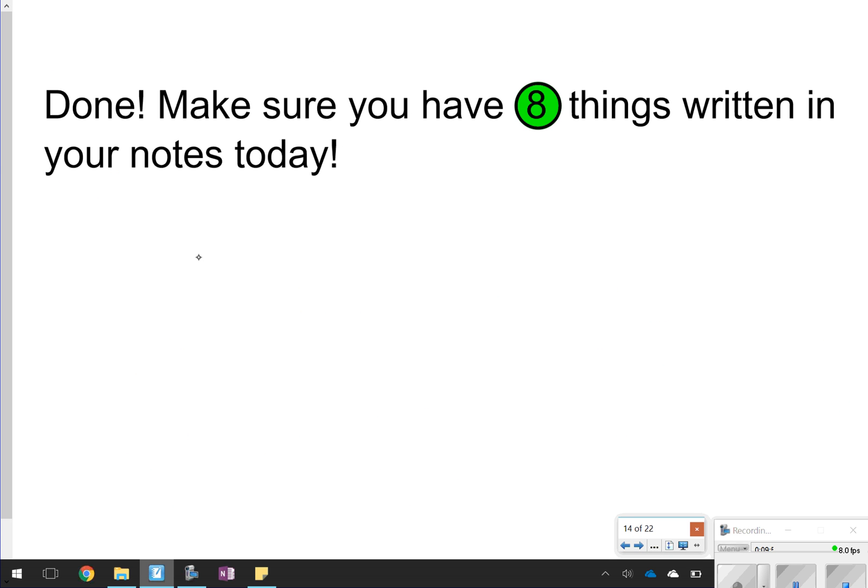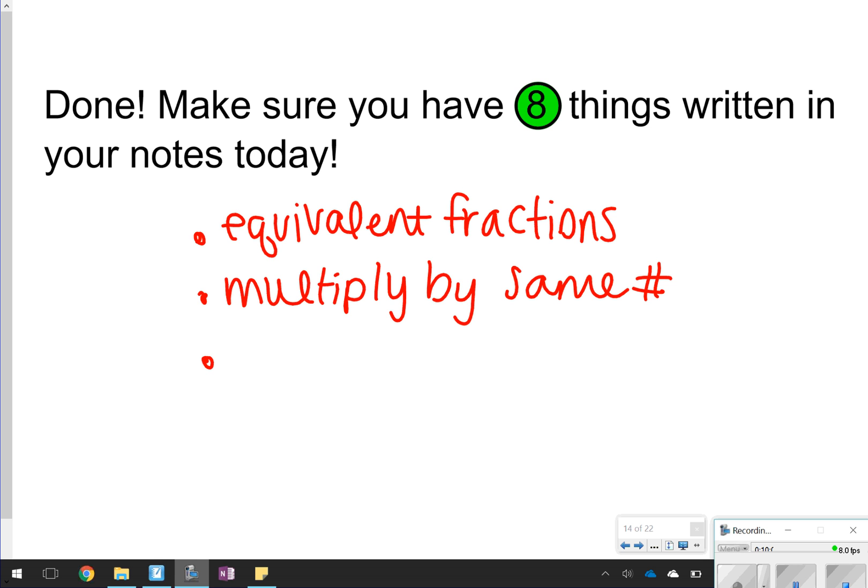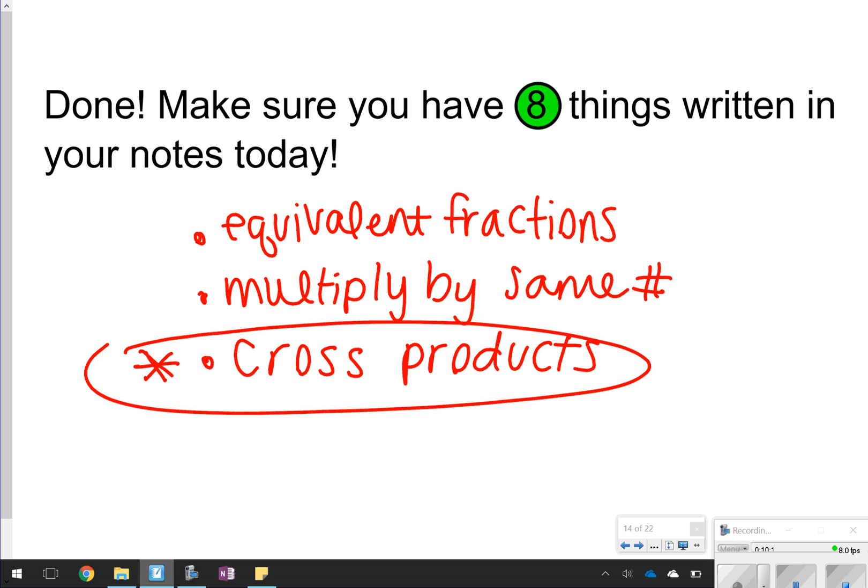So that's going to conclude our video. Basically, the three things we talked about is how to figure out if something is proportional. You know if something is proportional if they can be simplified to be equivalent fractions. You know if something is proportional if you can multiply by the same number and still get the correct output. And you know you can also use cross products to tell if something is proportional. I would maybe start using cross products the most because that's going to be able to help you, and it's going to work every single time. And it might be the easiest way for some of you as well. Thanks for tuning in. We'll see you next time.